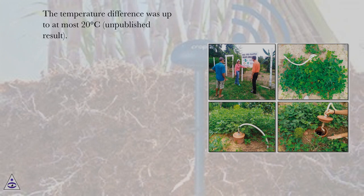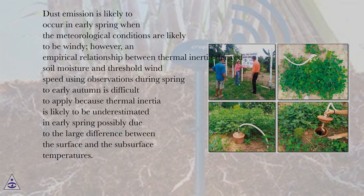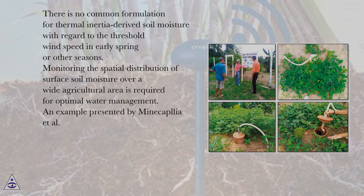The temperature difference was up to at most 20 degrees Celsius (unpublished result). Dust emission is likely to occur in early spring when meteorological conditions are likely to be windy; however, an empirical relationship between thermal inertia-derived soil moisture and threshold wind speed using observations during spring to early autumn is difficult to apply because thermal inertia is likely to be underestimated in early spring, possibly due to the large difference between the surface and subsurface temperatures. There is no common formulation for thermal inertia-derived soil moisture with regard to the threshold wind speed in early spring or other seasons.